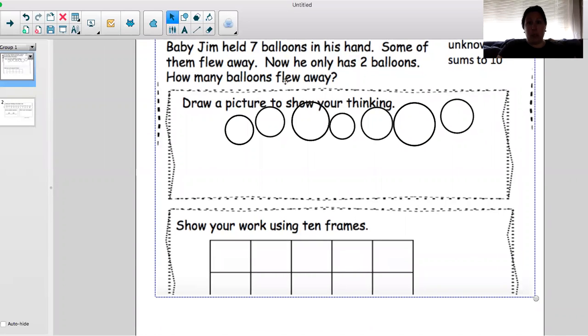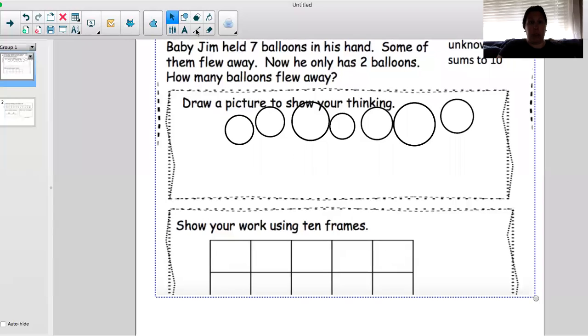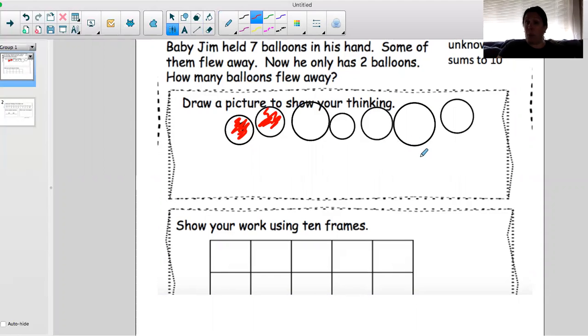And now he only has two balloons. Okay, so we know he only has, let me do that in a different color. Now Jim only has two balloons. One, two. How many balloons flew away? Well, those are the balloons that I didn't color in red. So let's count: one, two, three, four, five. Five balloons blew away.